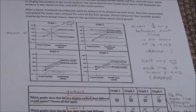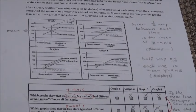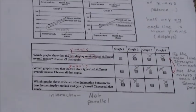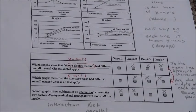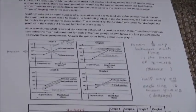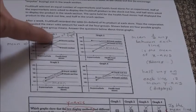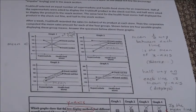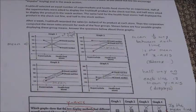There are four possible graphs displaying the group means. You have to watch whether the information they're asking about is along the x-axis or the y-axis. The first question asks which graphs show that the two display methods had different overall means. The display methods — checkout line and snacks section — are along the y-axis going up and down.